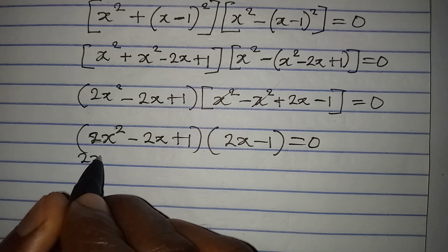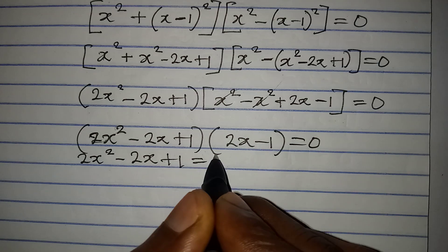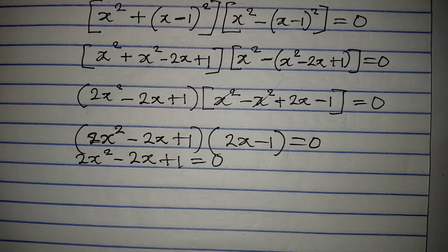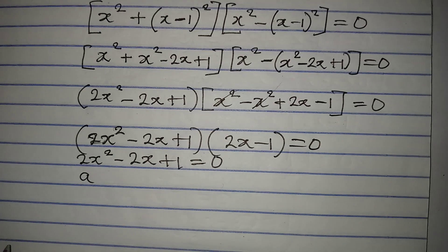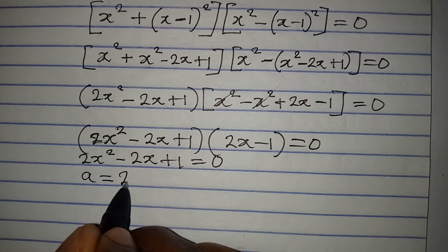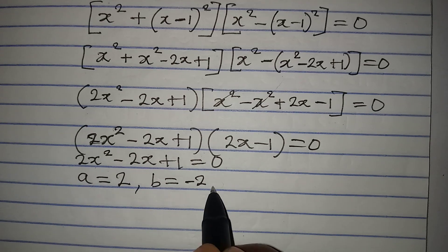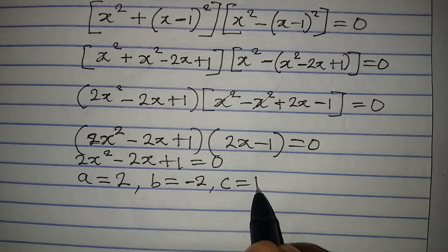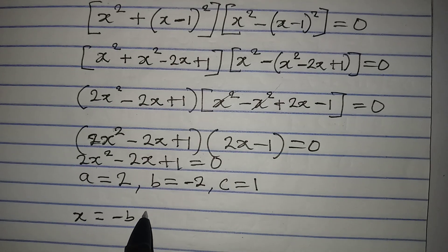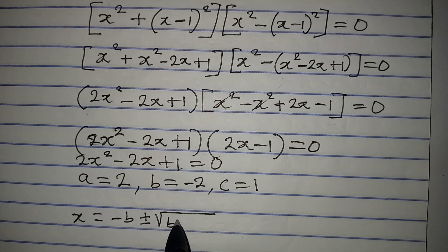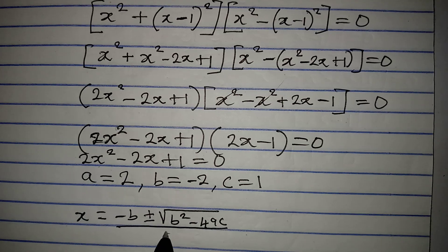Taking the first factor: 2x squared minus 2x plus 1 equals 0. This is a quadratic equation and we solve it using the quadratic formula. Here a equals 2 (coefficient of x squared), b equals minus 2 (coefficient of x), and c equals 1 (the constant). The formula is x equals negative b plus or minus the square root of b squared minus 4ac, all over 2a.